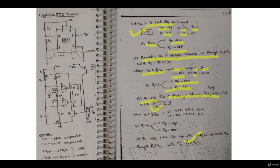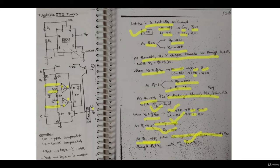Once discharging is happening, the capacitor voltage will go down. Once it goes below one-third Vcc, the upper comparator will be off and lower comparator will be on, because this voltage is now less than the reference. So R will be 0 and S will be 1, meaning Q-bar is 0 and output will be high again. The Qt transistor will be off, so the capacitor charges toward Vcc through R1 and R2 with time constant (R1 + R2)·C. When the voltage again exceeds two-thirds Vcc, the same process repeats - the capacitor charge switches between two-thirds Vcc and one-third Vcc.